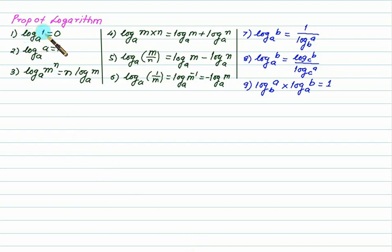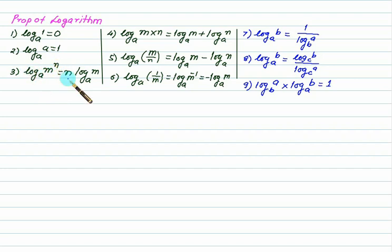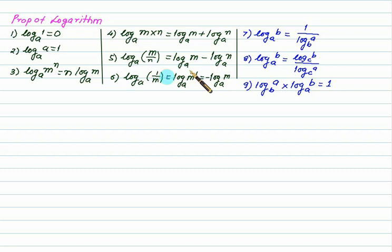In this video we are going over logarithmic properties. We have: log of 1 to base a is 0; log of a to base a equals 1; log of m to the power n to base a can be written as n·log of m to base a; and if we have a product, we can write it as addition.